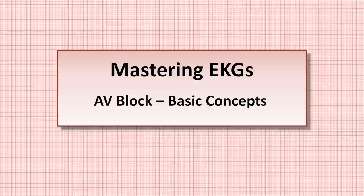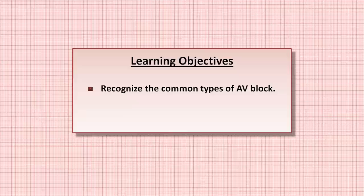Today, I'll be talking about the basic concepts of AV block, in which there is a lack of normal electrical conduction from the atria to the ventricles through the AV node and His-Purkinje system. The learning objectives are to be able to recognize the common types of AV block, and to know their etiologies. A classification system has been developed for the different forms of AV block that has proven helpful in identifying their etiology, prognosis, and guiding treatment.